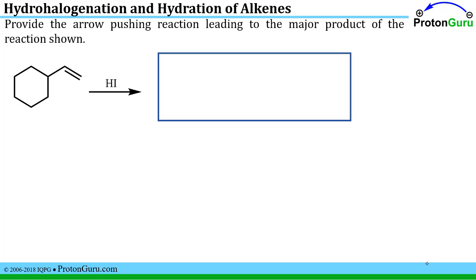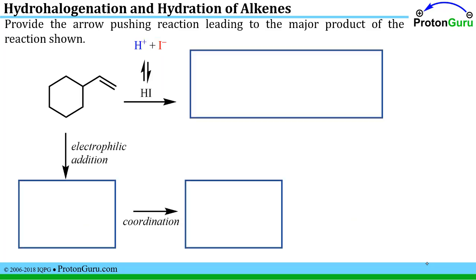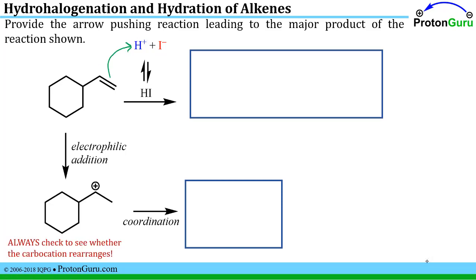Here's a similar problem: provide the arrow-pushing mechanism for the major product. Again, an alkene with a strong acid, so we follow the same procedure. Electrophilic addition first — the strong acid has dissociated. We form the carbocation with the positive charge on the secondary carbon, not the primary. Now check whether that carbocation rearranges. It won't get more stable by going primary. But look over here — that's a tertiary carbon, so we need to do a carbocation rearrangement.